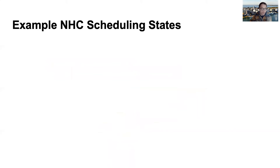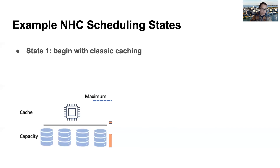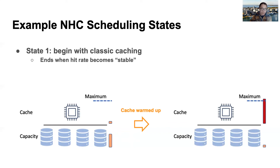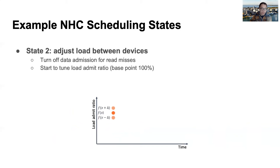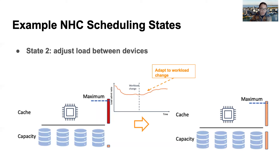To show how the scheduling works, here is an example run. NHC always begins with classic caching to warm up the cache device, and enters its tuning state when a relatively stable hit rate is detected. Then NHC starts to adjust the load across devices — it first turns off data admission for read misses, then tunes the load-admitted ratio. At any time point with the current load-admitted ratio as x, NHC tries to evaluate function f at both x-plus-delta and x-minus-delta. Like gradient descent, NHC moves the ratio toward the direction that improves performance. With continued tuning, NHC readjusts the load across cache and capacity devices, utilizing the performance available in capacity devices.